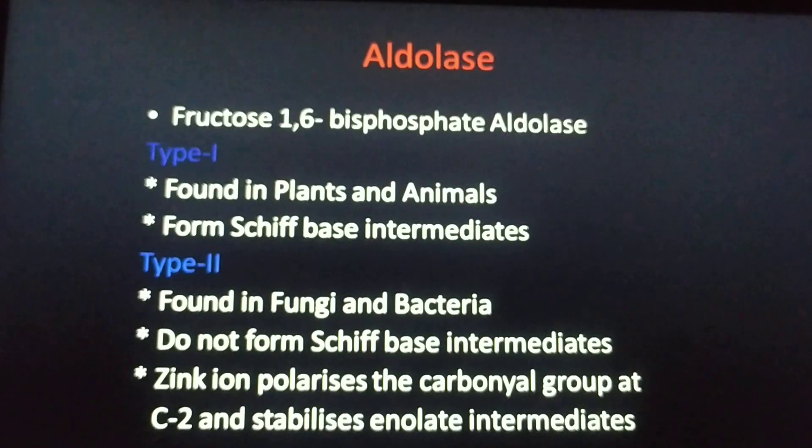Aldolase is actually the short form of fructose-1,6-bisphosphate aldolase. This aldolase is of two types: type I and type II. Type I is particularly found in plants and animals and type II is found in fungus and bacteria. Type I forms Schiff base intermediates while type II does not form Schiff base intermediates.